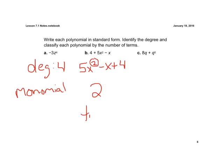And it's a trinomial because there are three terms. And the last one — write it in standard form. We only have two terms, so this is what we call a binomial. We see q to the fifth power, so we write that first. Then we go down from there — the next highest is the first exponent, so we write 8q.